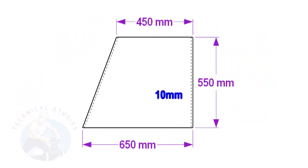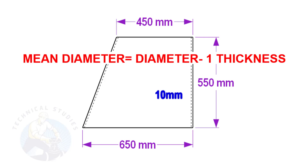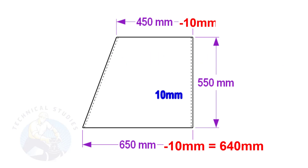To make a layout, we need to calculate the circumference of the top and bottom sides of the cone. To calculate the circumference, we need to know the mean diameter of the cone's bottom and top. Deduct 1 thickness from the diameter to get the mean diameter. Assuming the base diameter of the cone is 650 mm and the thickness is 10 mm, the mean diameter is 650 minus 10, equal to 640 mm.